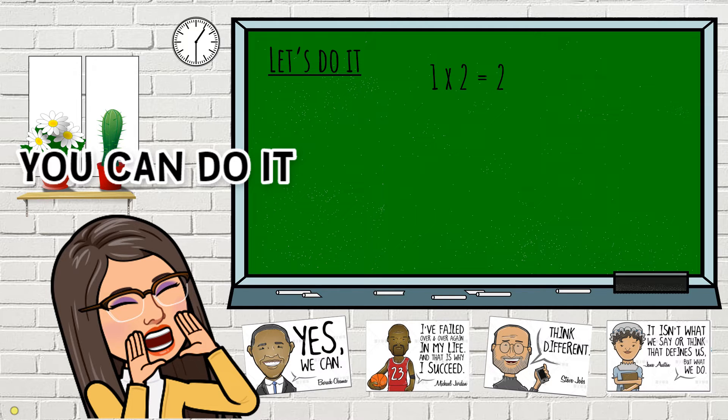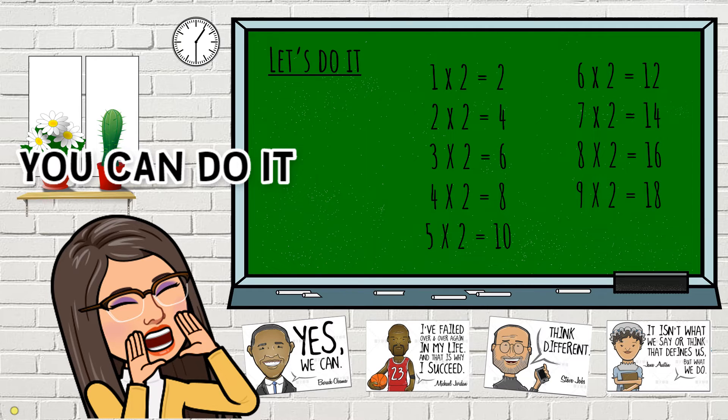How would you read this? Would you read this as one times two is two? Yes, nothing's wrong with that. But that is very long and tedious and you get tired after a while. So I recommend you read it this way: one to two, two to four, three to six, four to eight, five to ten, six to twelve, seven to fourteen, eight to sixteen, nine to eighteen, ten to twenty.